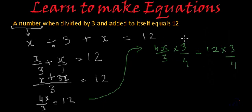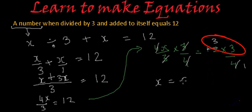And here on the left hand side, this 3 will get cancelled by this 3. This 4 will get cancelled by this 4. And we will get x is equal to 9.